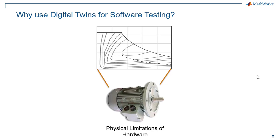So why would we want to use a digital twin for the development and testing of software? There are many different reasons. First and foremost, software we develop for these types of applications is ultimately going to be interacting with hardware, which can be electromechanical or of other domains. That hardware is going to have physical operating limits. For variable frequency drives, like in the case of our DrawWorks system, there are operational torque-speed curves at which we can operate, and operation above this is going to either overheat or damage the equipment.